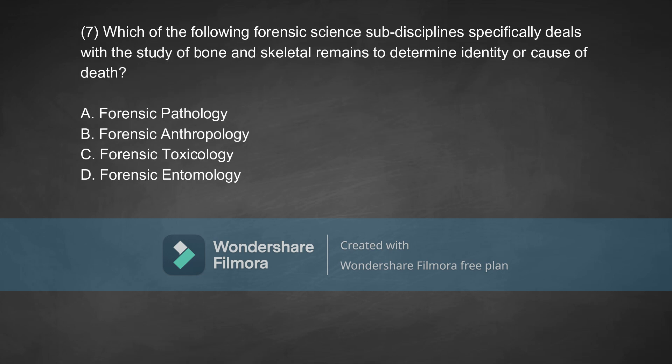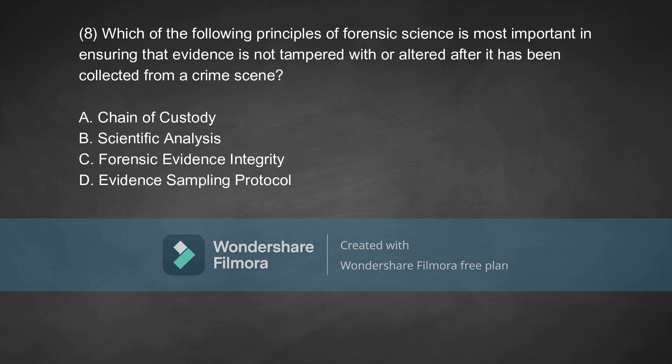Coming to the next question: which forensic science subdiscipline specifically deals with the study of bone and skeletal remains to determine identity or the cause of death? Option A, forensic pathology. Option B, forensic anthropology. Option C, forensic toxicology. Option D, forensic entomology. The correct answer is Option B.